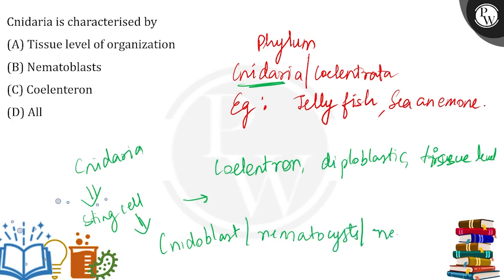So nematoblast are present, the coelenteron cavity is present — which is why it is also known as Coelenterata — and tissue level of body organization is also present in the phylum Cnidaria. These are the features of the phylum Cnidaria.